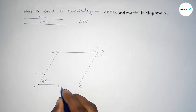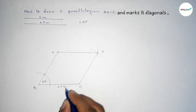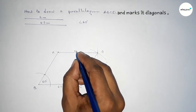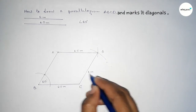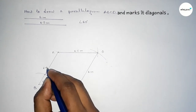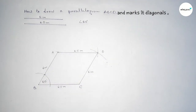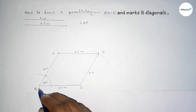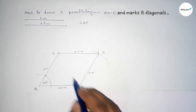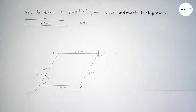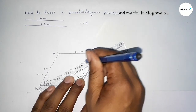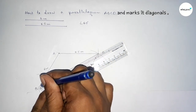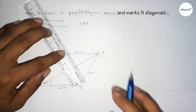This side is 6.5 centimeters, the opposite side is also 6.5 centimeters, this side is 6 centimeters, and this side is also 6 centimeters. Now joining the two diagonals of the parallelogram — BD is a diagonal of the parallelogram.